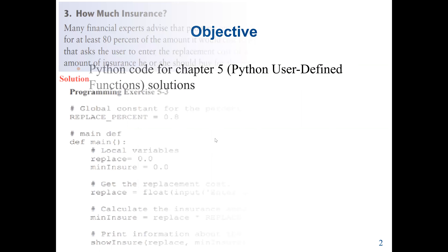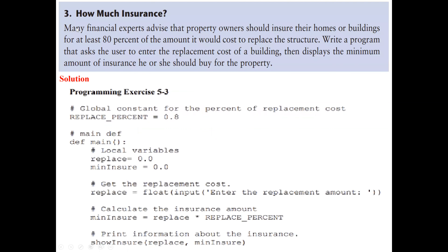We are going to solve two problems. Our first problem is: as many financial experts advise, property owners should ensure their homes or buildings for at least 80% of the amount it will cost to replace the structure. We should write a program that asks the user to enter the replacement costs of the building, then display the minimal amount of insurance he or she should buy for the property. Here we are going to practice how we can write our own user-defined function.